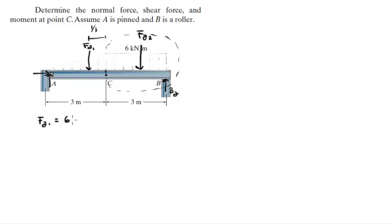Let's find them. Fy1 is equal to 6 kilonewtons per meter times the length of the triangle which is 3, divided by 2, because the area of a right triangle is length times height over 2. So that comes out to be 9 kilonewtons. And Fy2, which is the area of the rectangle, is simply 6 in height and 3 in length, which comes out to be 18 kilonewtons.